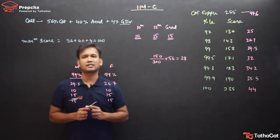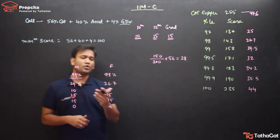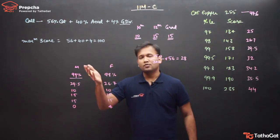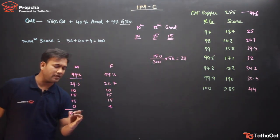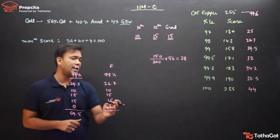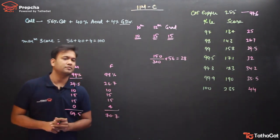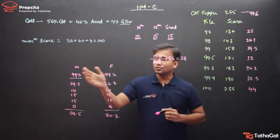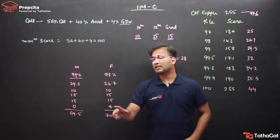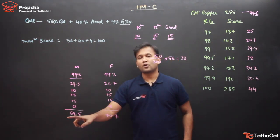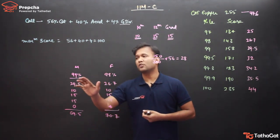The third component is gender diversity, worth 4 marks. A female candidate gets full 4 marks while a male candidate gets 0. Adding up all values: male at 99 percentile gets 40 + 29.5 = 69.5, while the female at 98 percentile gets 44 + 26.7 = 70.7. So the male at 99 percentile scores less overall than the female at 98 percentile, because of the gender diversity component.